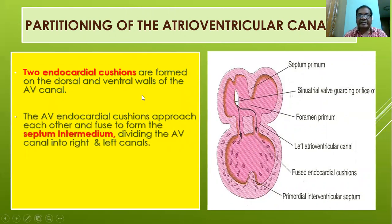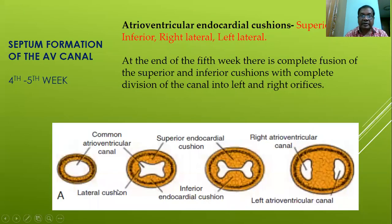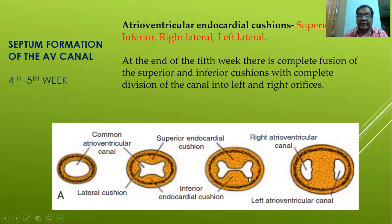Partitioning of the atrioventricular canal: two endocardial cushions are formed on the dorsal and ventral walls of the AV canal. The AV endocardial cushions approach each other and fuse, forming the septum intermedium, dividing the AV canal into right and left canals. This canal partially separates the primordial atrium from the primordial ventricle. By the end of the fifth week, there is complete separation — the superior and inferior cushions completely divide the AV canal into right and left orifices due to fusion of the superior and inferior endocardial cushions.